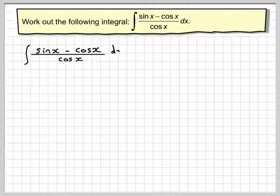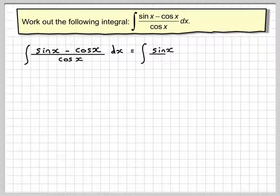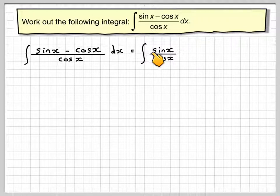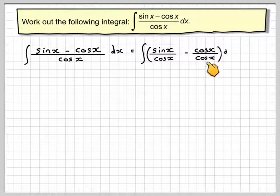So if we write that out, we're going to realize that cos x is a common denominator. So if we separate it up, which is a common technique when doing integration, we're going to get sin x over cos x minus cos x over cos x dx.